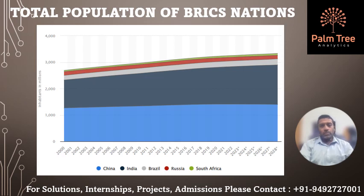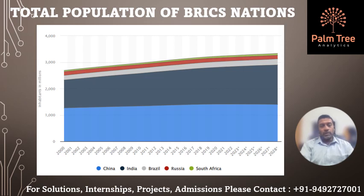The fastest growing population in the BRICS block, however, is that of South Africa, which is at the earliest stage of demographic development. Russia is the only BRICS country whose population is currently in decline, and it has been experiencing a consistent natural decline for most of the past three decades. Between 2000 and 2026, the population of the BRICS countries is expected to grow by 625 million people, and the majority of this will be in India and China.